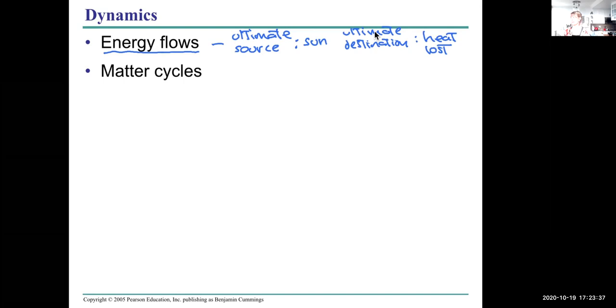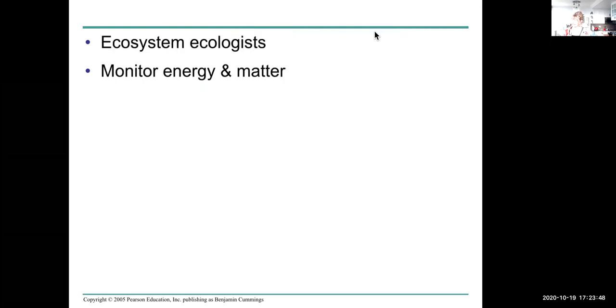Matter, on the other hand, cycles through a system. We monitor energy and matter - that's what ecosystem ecologists do. We might collect data on evapotranspiration rates of forests to measure productivity, or when I was in fisheries, we would monitor salmon populations and how deforestation can affect streams.